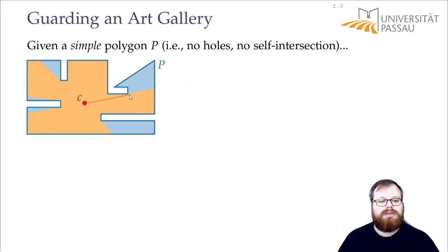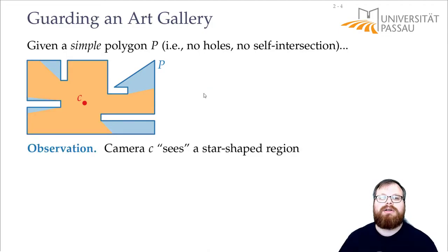So now it touches this corner, so it would go on like this, keep rotating, and this is all the points that can be seen by this camera. And such a polygon, the orange polygon here, is called a star-shaped polygon or a star-shaped region.